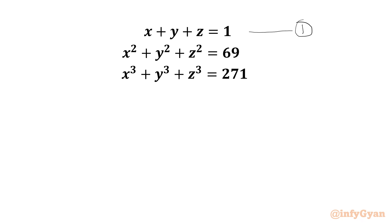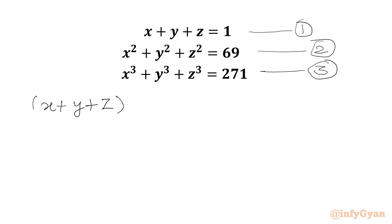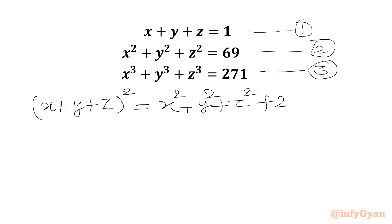This is equation 1, here we can write equation number 2, and this would be equation number 3. Now we will use one algebraic identity: x plus y plus z whole square equals x squared plus y squared plus z squared plus 2 times (xy plus yz plus zx).